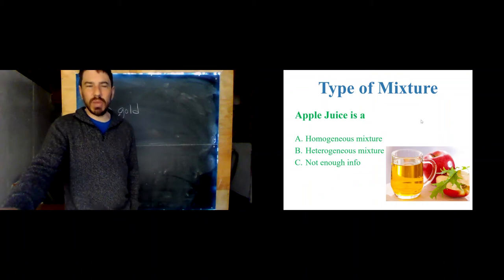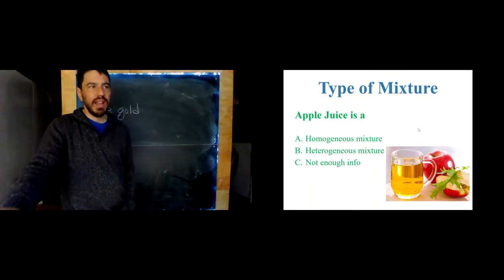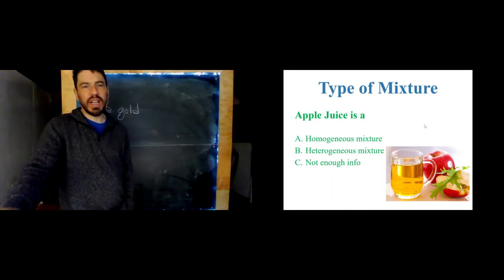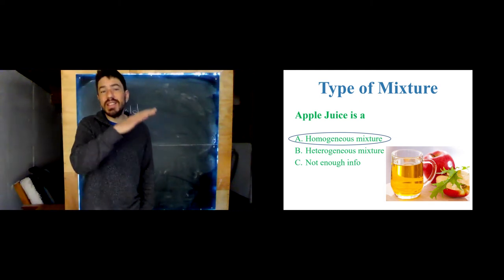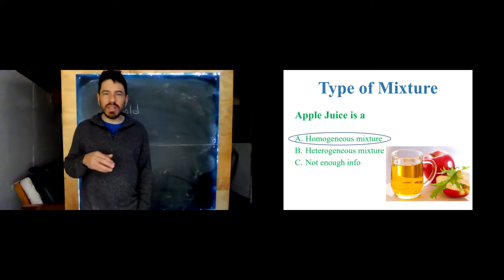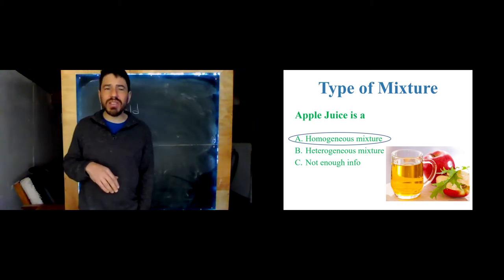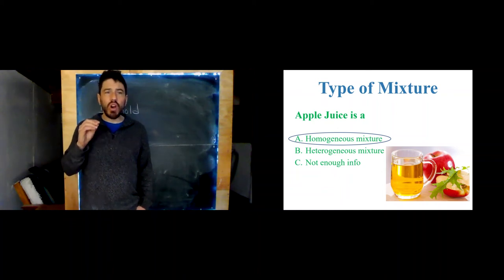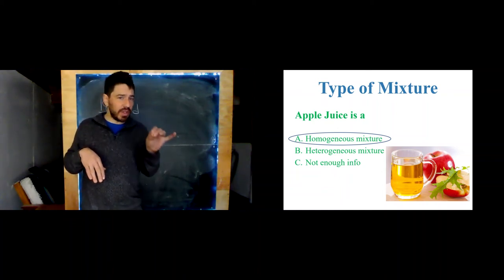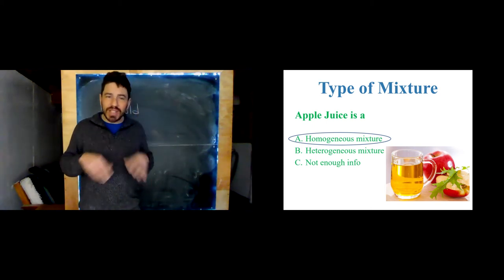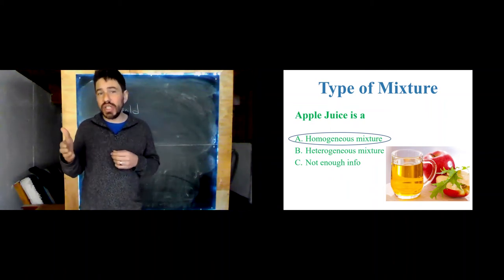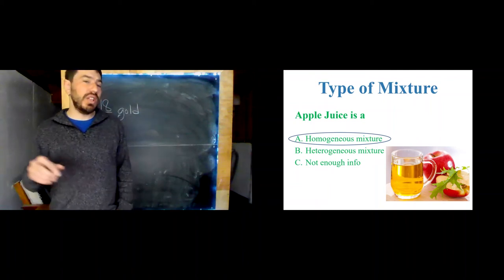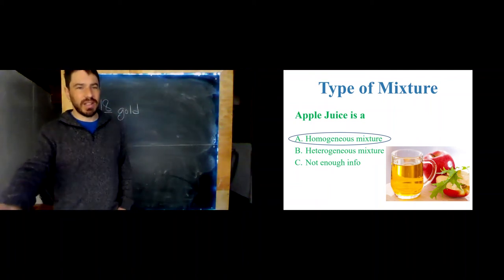Apple juice is what kind of mixture — homogeneous or heterogeneous? It's a homogeneous mixture, meaning the same throughout. Apple juice contains fructose, water, and other substances, but it's well mixed. However, a homogeneous mixture is not a pure substance — I've still got a little sugar, a little water, a little apple. Even if it's all well mixed together, it's not a pure substance. Homogeneous means the same throughout; heterogeneous means not the same throughout.